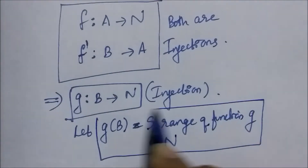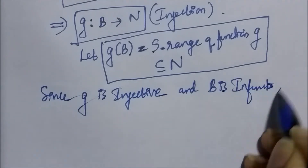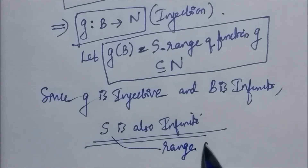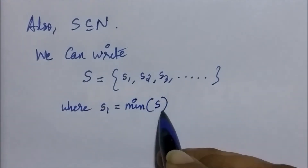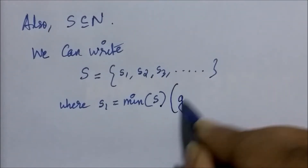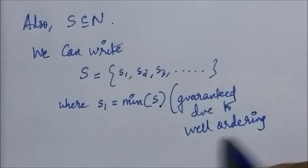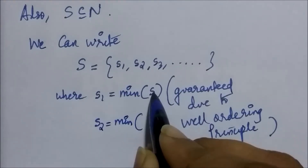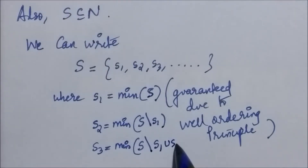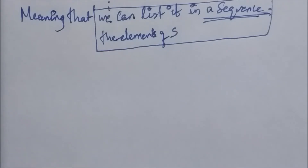Obviously set S is a subset of ℕ because the co-domain is the set of natural numbers. Since g is injective and B is infinite, S is also an infinite set. S is the range of g and S is a subset of ℕ. We can write S as {s₁, s₂, s₃, ...} where s₁ is the minimum of S — the least element. By the well-ordering principle, any non-empty subset of the positive integers has a least element, so we take s₁ as the minimum, s₂ as the second minimum, and so on. In this way we list the elements of S in a sequence, which implies S is countably infinite.